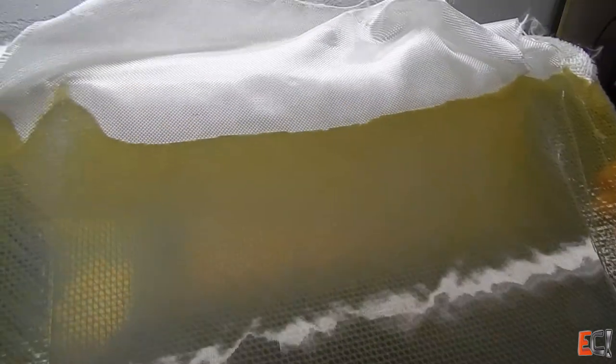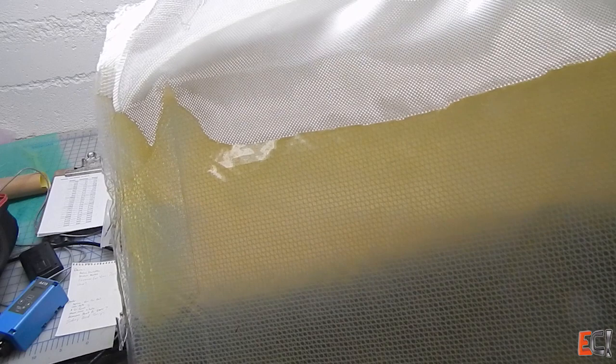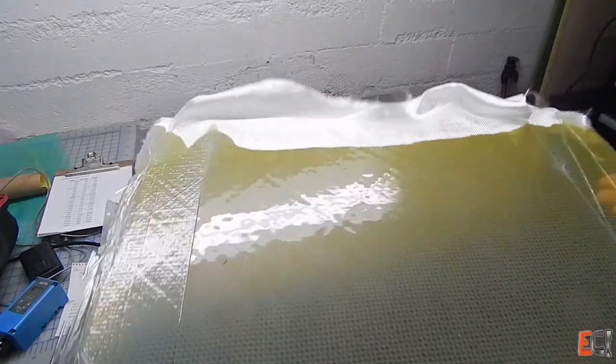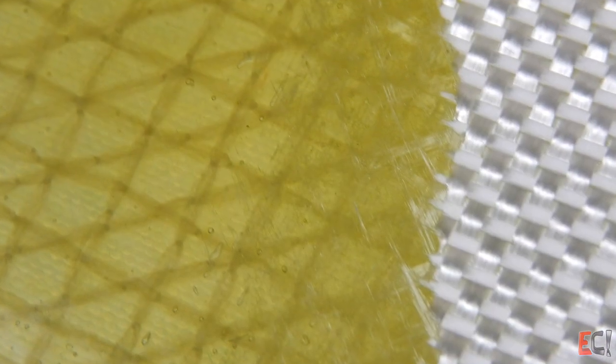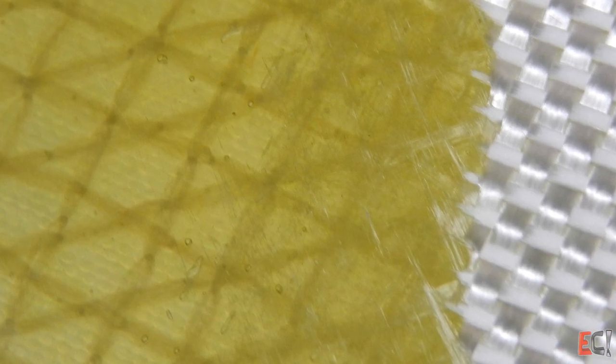You could definitely see the gradient from clear to yellow as you get closer to the resin front. I'm told that the yellowing is just a consequence of faster cure, more exotherm, and that it does not affect the mechanical properties of the resin. Right at the resin front you can see just that last bit of air that didn't make it out right as the resin gelled.